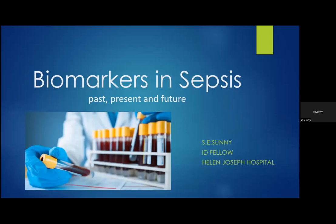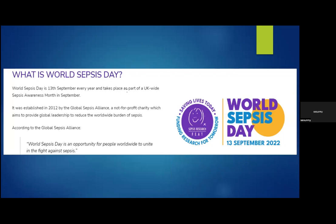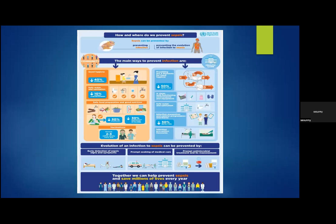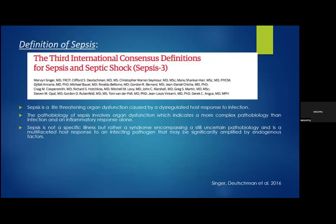Good afternoon, everyone. I'm Sharon. I'll be presenting on biomarkers and sepsis. It's quite a broad topic, so I hope to cover the important points in the time allocated. It's ironic that I'm doing this talk in September, because 13 September has been declared World Sepsis Day, and it's part of a UK-wide sepsis awareness month in September. It was initially established in 2012 by the Global Sepsis Alliance and serves to promote global leadership to reduce the worldwide burden of sepsis. The World Health Organization also endorses this, and they've been promoting various ways in which infections can be prevented, both at a community level as well as a healthcare level.